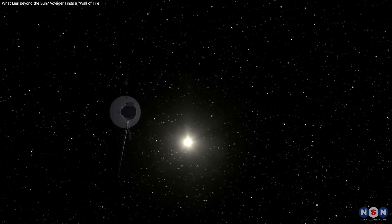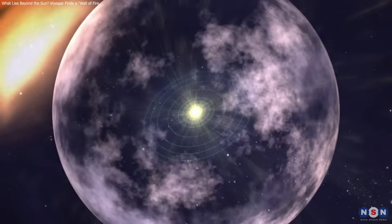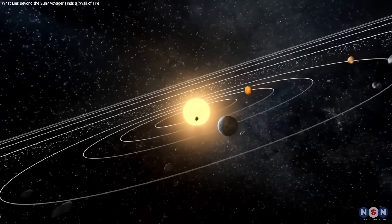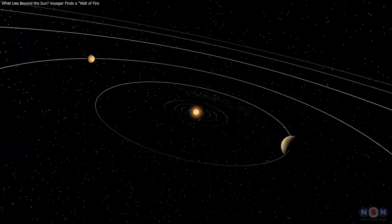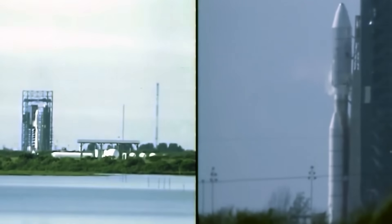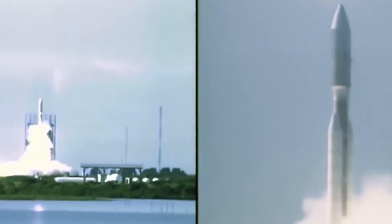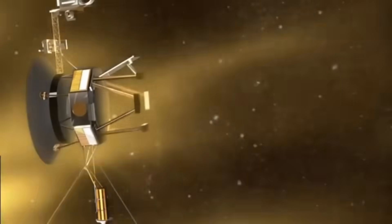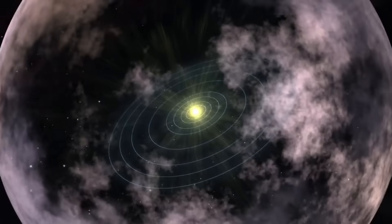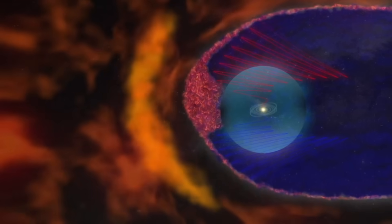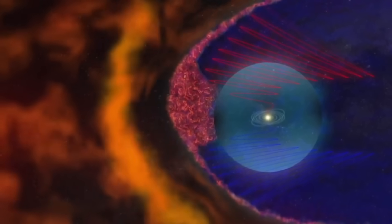Nearly 50 years on, the Voyagers are still rewriting space science, revealing a wall of fire at the solar system's edge, and reshaping our view of the sun's reach. What other secrets await beyond the heliopause? Stay tuned, the frontier is just beginning!